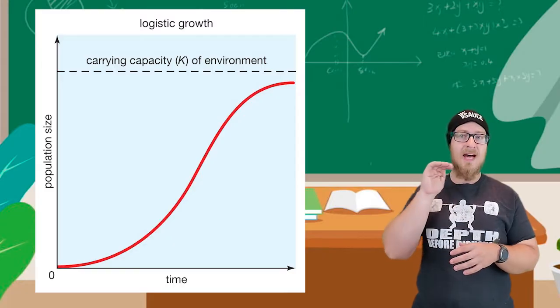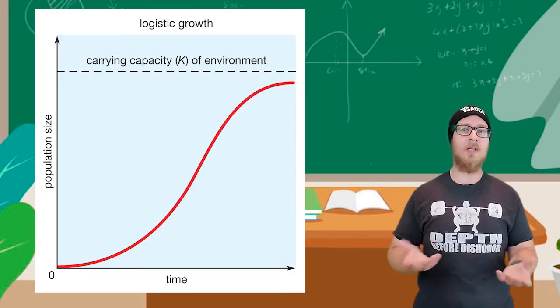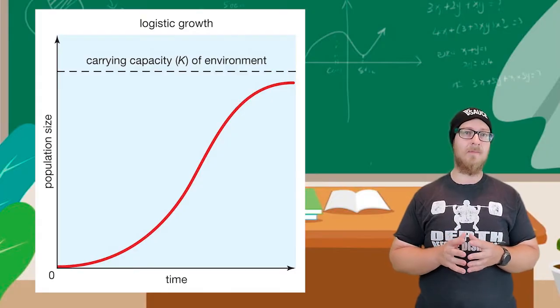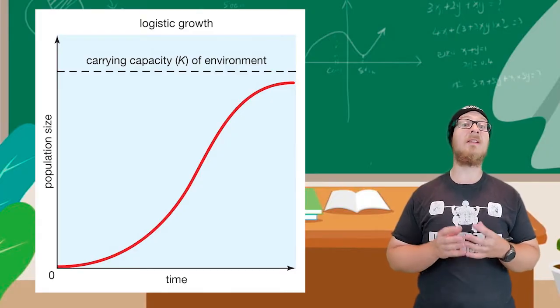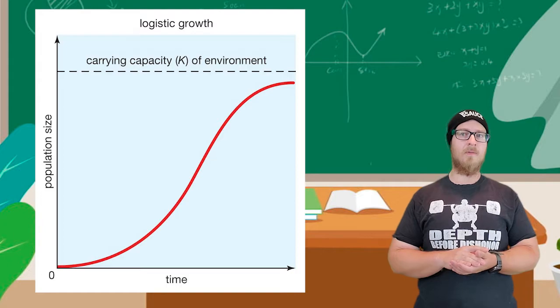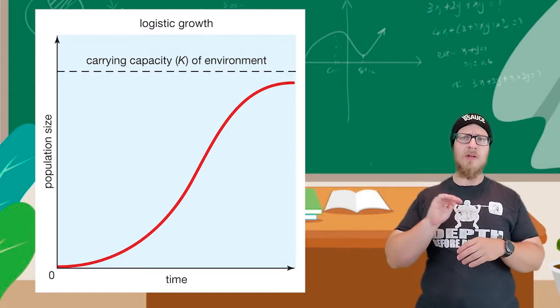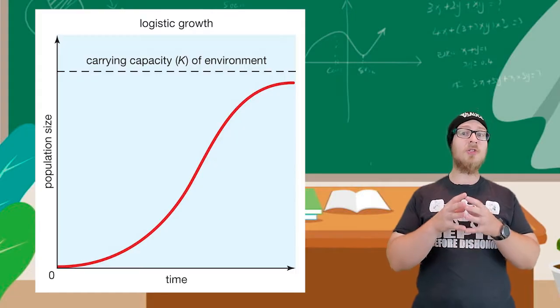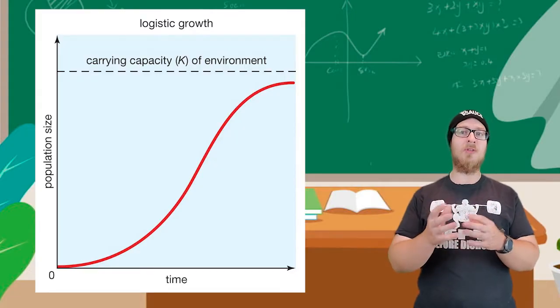Here, the dotted line represents the carrying capacity, which is abbreviated with the variable K. This is called a logistic growth curve. Notice how the closer the population gets to its carrying capacity, the slower the growth of the population becomes.